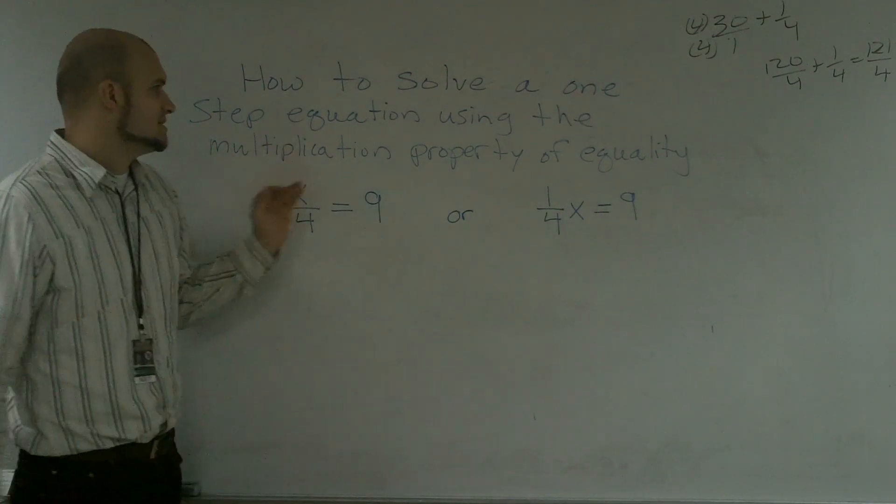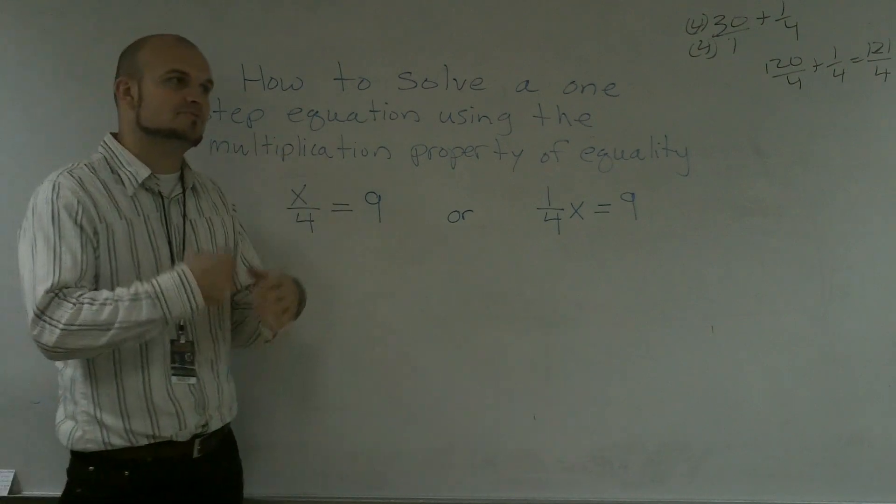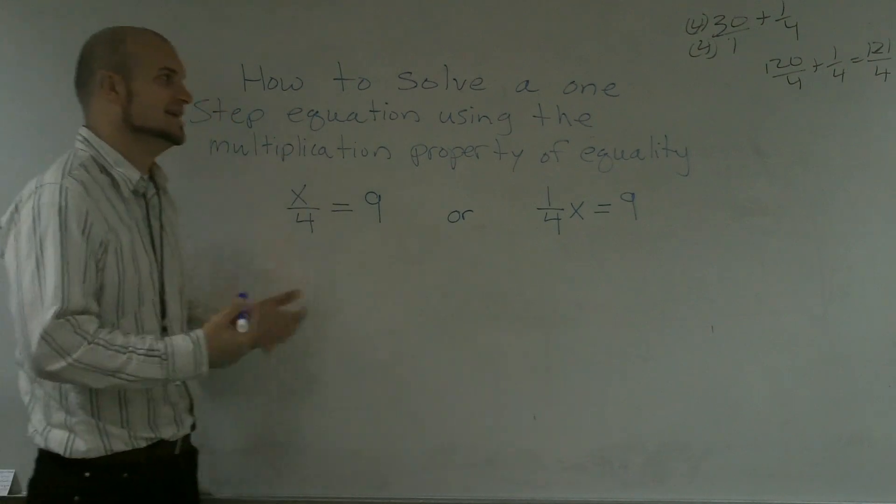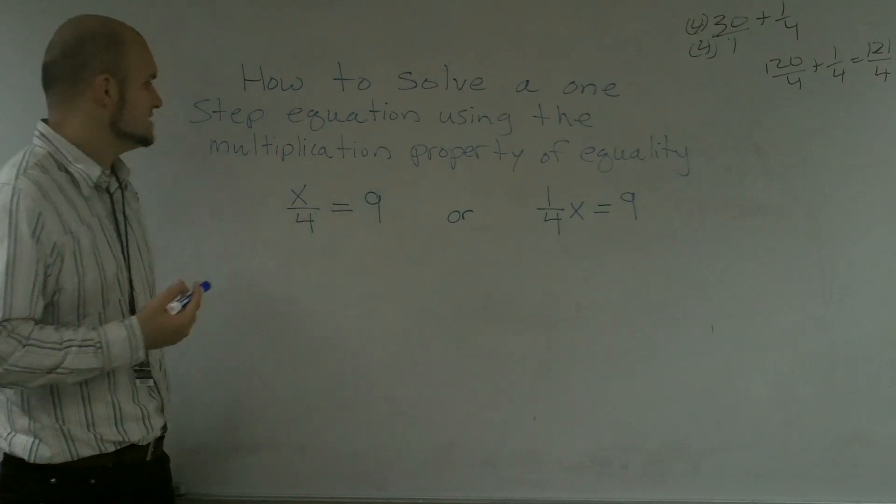All right, what I'd like to do is show you how to solve a one-step equation using the multiplication property of equality. And if you remember, the multiplication property of equality states that if you multiply one number on both sides, your equation's still going to remain the same.